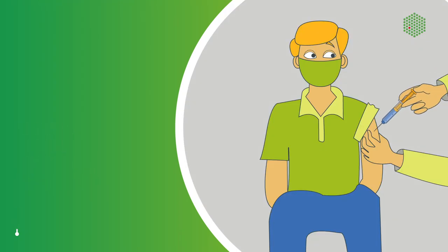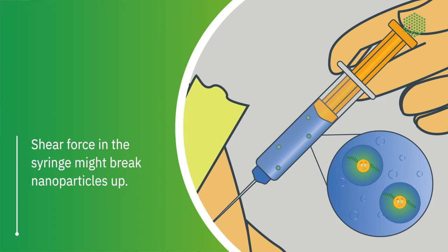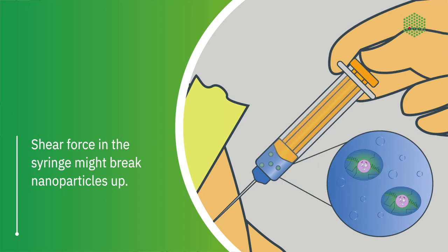Another critical moment is when the vaccine passes through the needle of the syringe. The nanoparticles undergo a high shear force which might break them up, kind of like going down a water slide at high speed. SAXS can tell us if these nanoparticles survive the trip.